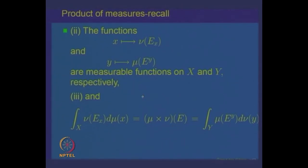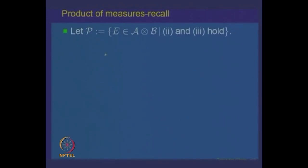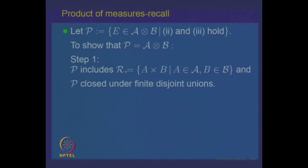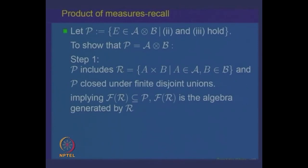To prove this, we look at the class P of all those subsets E in the product sigma algebra for which these properties hold — namely, x going to nu(E_x) and y going to mu(E_y) are measurable functions, and the integrals equal the product measure of E. Our aim is to prove that P equals the product sigma algebra A cross B. The first step is proving P includes the rectangles, which we proved, and P is closed under finite disjoint unions. Since rectangles form a semi-algebra, the algebra F_R generated by rectangles is also inside P.